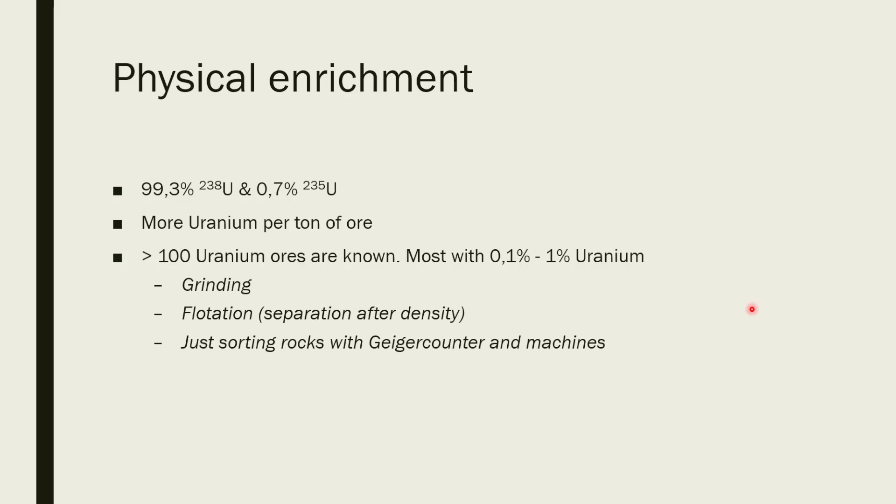Of course, there is some naturally occurring uranium-234, which is just a decay product of uranium-238. If you look at uranium, you won't find it as a metal in nature, but you will find it in the form of an ore.